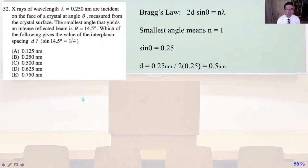52. X-rays of wavelength lambda equal 0.25 nanometers are incident on the face of a crystal at angle theta measured from the crystal surface. The smallest angle that yields an intense reflected beam is theta equals 14.5 degrees. Which of the following gives the value of the interplanar spacing D? The problem also gives sine of 14.5 degrees equals about one fourth. So we're going to use Bragg's law where 2D sine of theta equals N lambda, and the smallest angle means N equals 1. So sine of theta they already gave us equals 0.25. Just plug in our numbers. D equals 0.25 nanometers divided by 2 times 0.25 and that equals 0.5 nanometers. That is answer C.